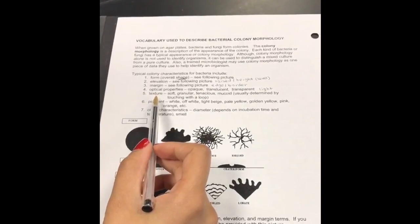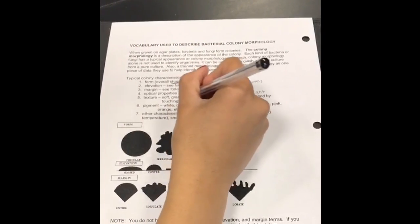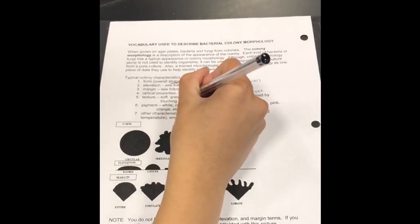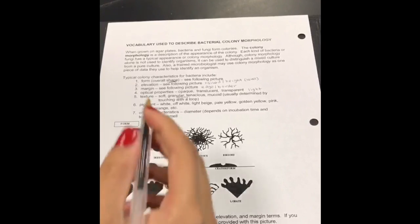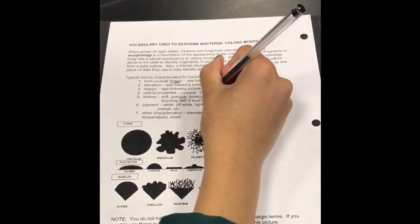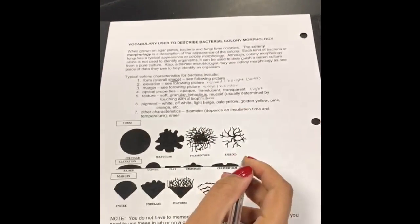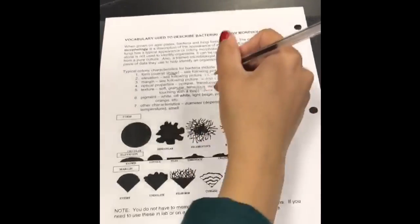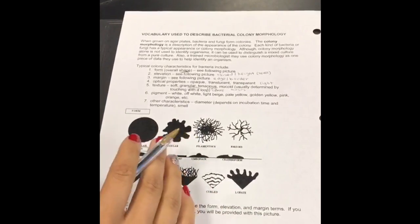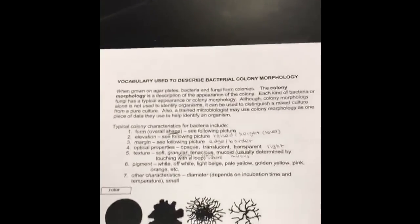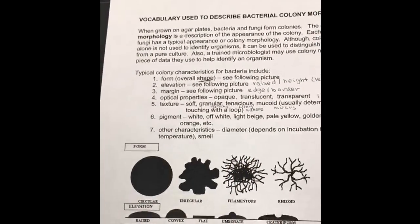Next is texture. We have soft, and we have granular, which describes how grainy it is. Then we have tenacious, which refers to how it clings or adheres to something. Mucoid describes how it resembles mucus. To find the texture of a colony, you use an inoculating loop and touch it to feel what texture it takes.